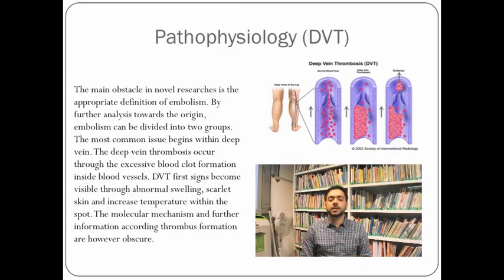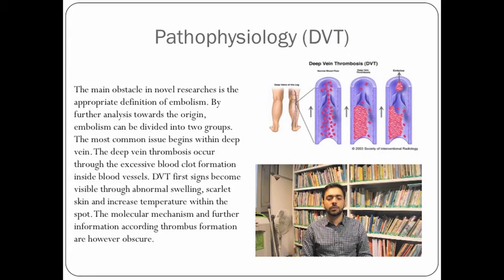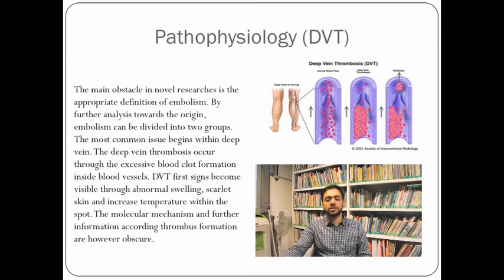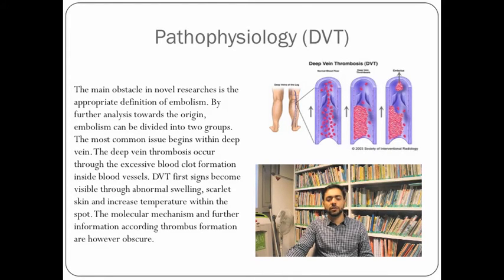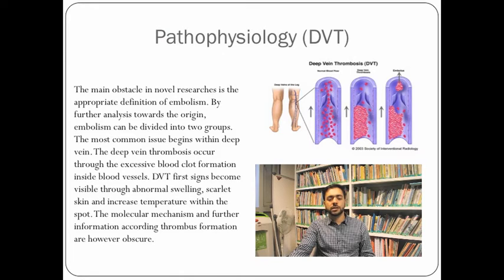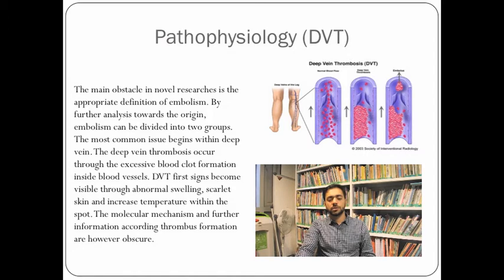The main obstacle in novel research is the appropriate definition of embolism. By further analysis towards the origin, embolism can be divided into two groups. The most common issue begins with deep veins. Deep vein thrombosis occurs through excessive blood clot formation inside the blood vessels. DVT's first signs become visible through abnormal swelling, scarlet skin, and increased temperature at the site. The molecular mechanism and further information regarding thrombosis formation are, however, still obscure.